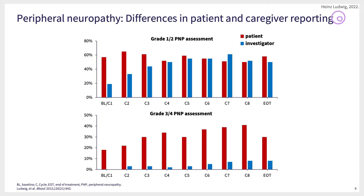But when it came to severe pain — grade three and grade four polyneuropathy — there is a significant discrepancy. We as caregivers failed to acknowledge the severe pain felt by several patients, as shown by the discrepancy between the red columns and the blue columns.